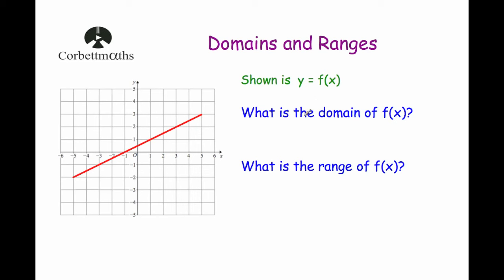So first of all, let's look at what a domain is of a function. Here we've got a graph, and this is the graph y equals f of x. That means that some values of x have been chosen — we've started at negative 5 all the way up to and including 5. A function has been applied to those, and they have generated the y values, the heights. For instance, whenever we've taken the value of negative 5 and applied the function, we've got the value of negative 2. When the value of 1 has been chosen and the function applied, we've got the output of 1. When the input of 5 is chosen and the function is applied, we've got the answer of 3.